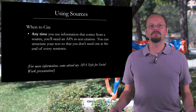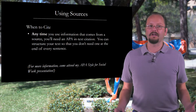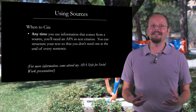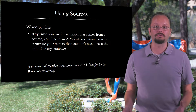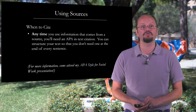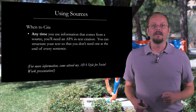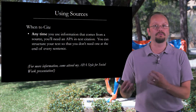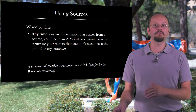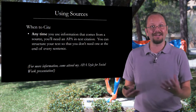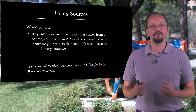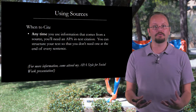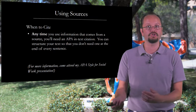An important question that often gets raised is: when do I cite, and how do I cite? First, when to cite: we need to provide an in-text citation anytime we use information that comes from one of our sources. If you're drawing extensively on one source, you can structure your text so that you don't need a citation at the end of every single sentence. However, if you're going back and forth between several different sources, you might end up with a citation every single sentence. APA style's goal is for you to convey clearly to the reader which pieces of information are coming from which source.